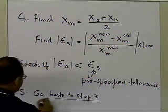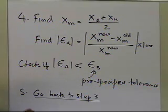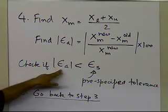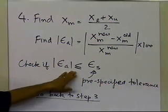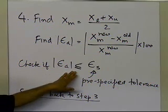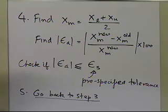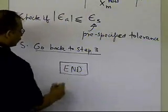Going back to step 3 means finding the values of the function at the lower limit and midpoint again to see in which interval the sign is changing. This is not an infinite loop, because you always check whether the absolute relative approximate error is less than or equal to the pre-specified tolerance. If the tolerance is never met, you can also restrict the number of iterations. That's the algorithm of the bisection method, and we'll take an example to show how it works.